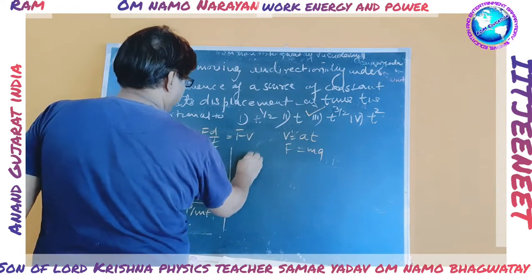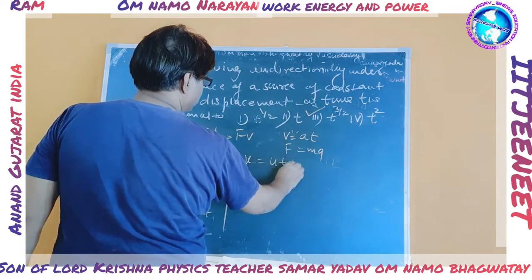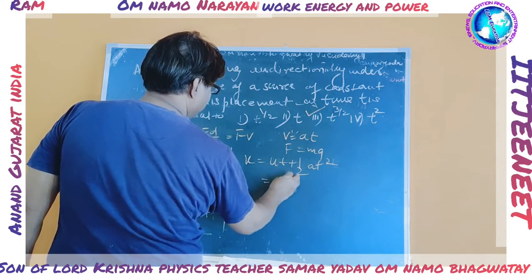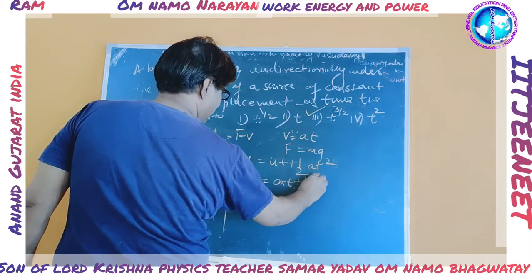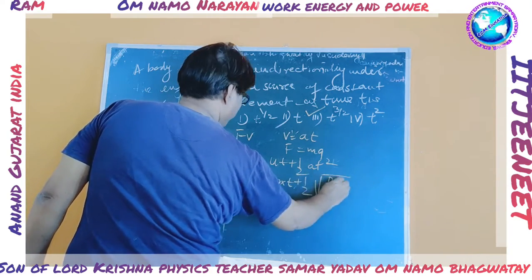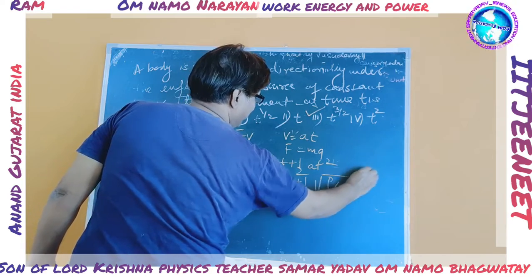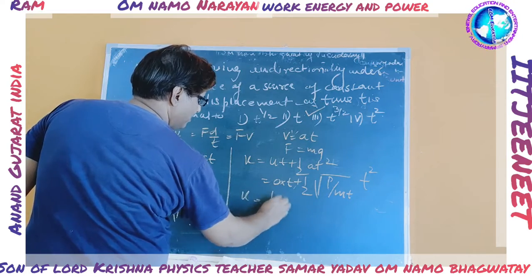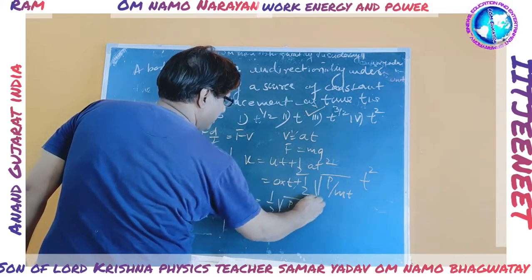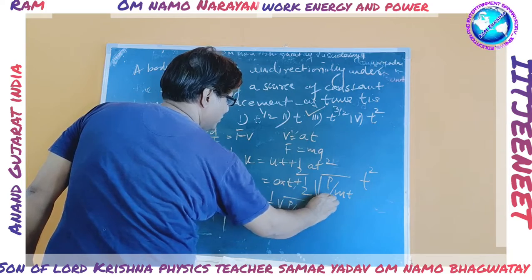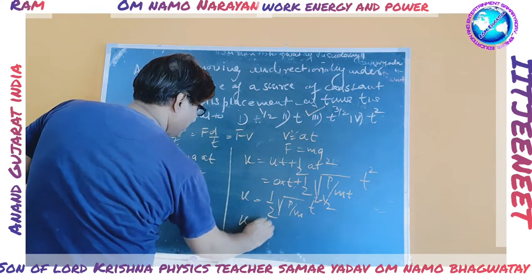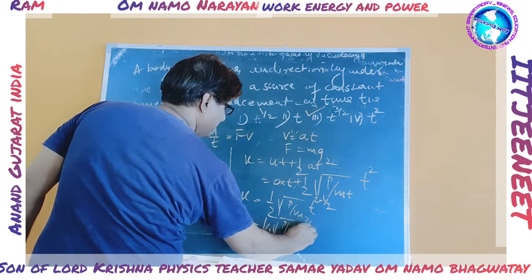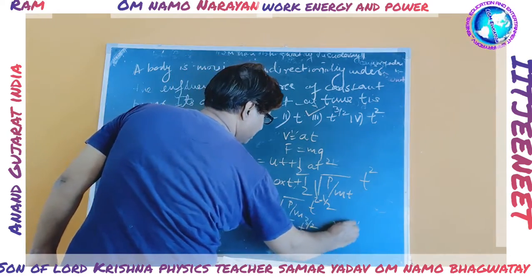Now we know that x is equal to ut plus half at², and initial velocity u is equal to 0. So x is equal to half a t². Substituting a, x is equal to 1/2 times under root of P upon m, into t^(3/2). Therefore, x is proportional to t^(3/2).